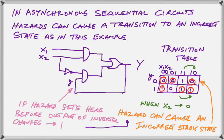These hazards can cause a transition to an incorrect state and this diagram here seeks to explain that carefully. Why the hazard can cause an incorrect stable state. Study the diagram carefully and observe.